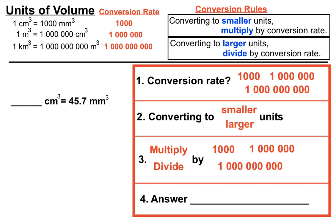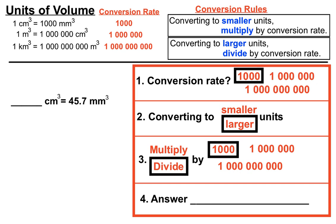Now we have 45.7 mm³ and we're converting back to cm³. The conversion rate is still 1000, but this time we're converting into larger units. So we divide by 1000, which moves the decimal point three places to the left. Our answer is 0.0457 cm³. We check the conversion rate, figure out whether we're moving to smaller or larger units, then apply the conversion rules.